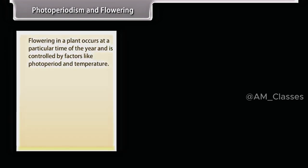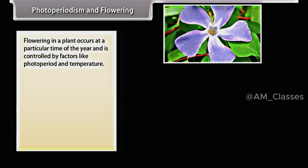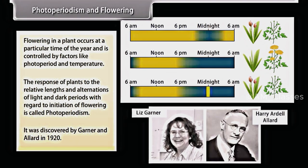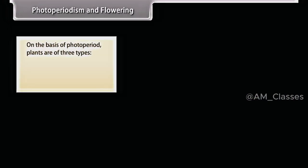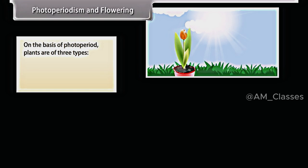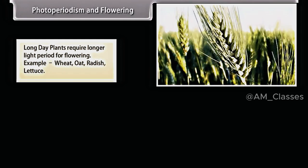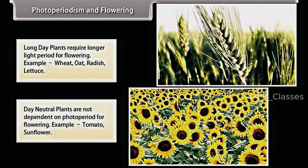Flowering in a plant occurs at a particular time of the year and is controlled by factors like photoperiod and temperature. The response of plants to the relative lengths and alternations of light and dark periods with regard to initiation of flowering is called photoperiodism. It was discovered by Garner and Allard in 1920. On the basis of photoperiod, plants are of three types: short day plants, long day plants, and day neutral plants. Short day plants require a longer dark period for flowering — examples: tobacco, rice, dahlia. Long day plants require a longer light period for flowering — examples: wheat, oat, radish, lettuce. Day neutral plants are not dependent on photoperiod for flowering — examples: tomato, sunflower.